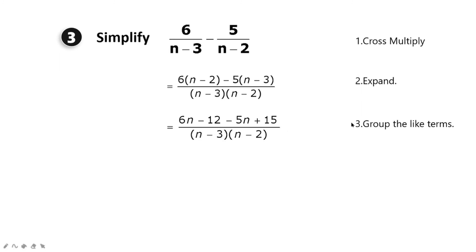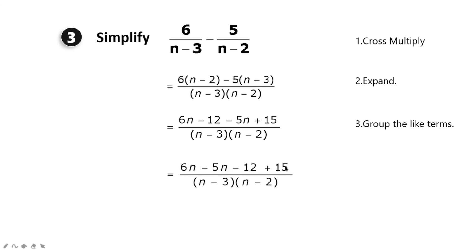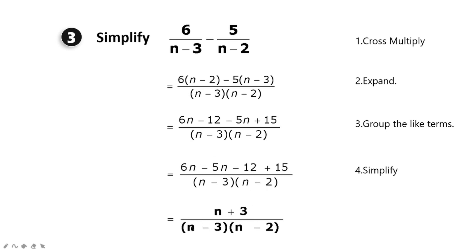The next step is to group the like terms: 6n - 5n and -12 + 15. Simplifying, 6n - 5n gives n, and -12 + 15 gives 3. So the final answer is (n + 3) over (n - 3)(n - 2).